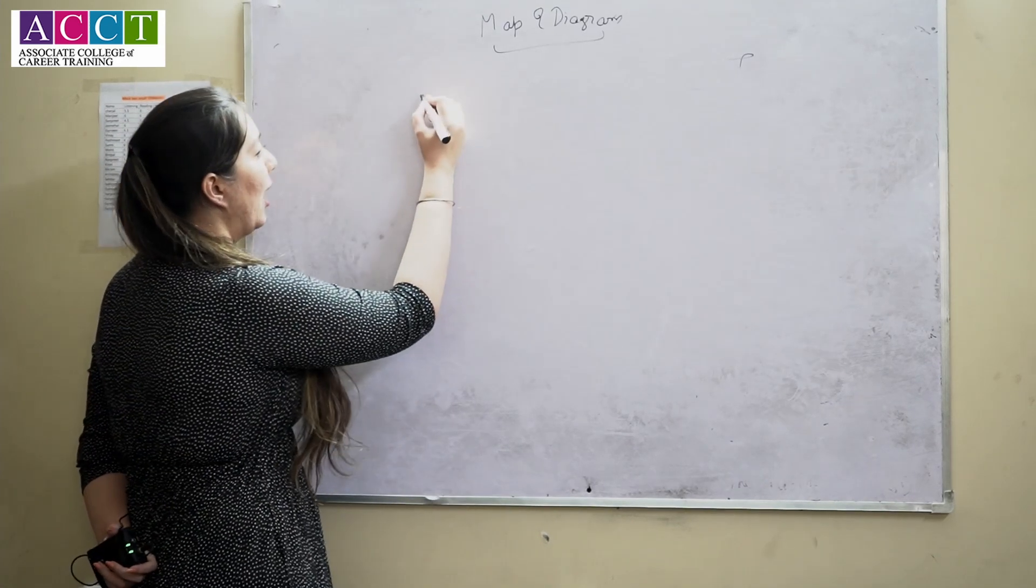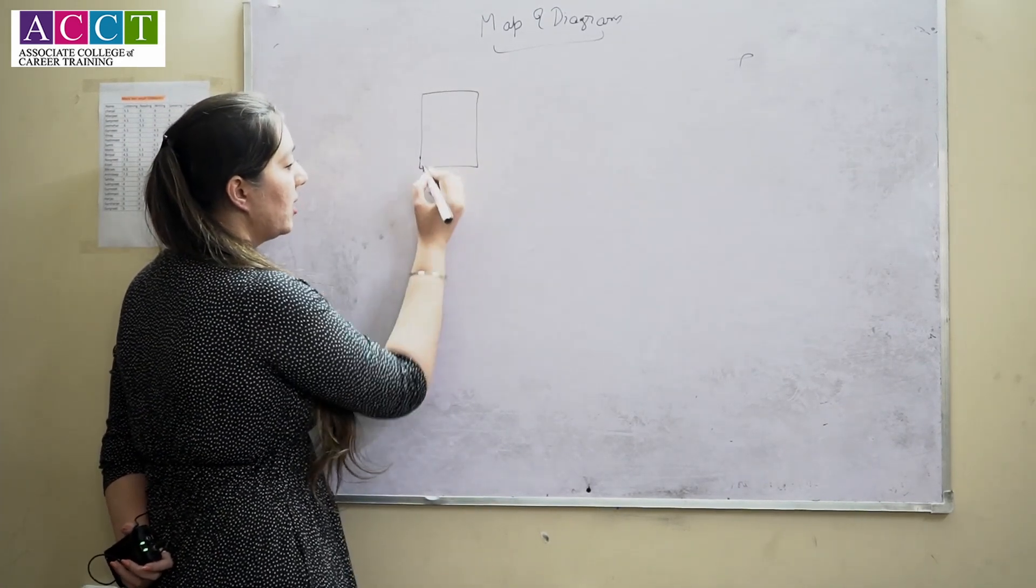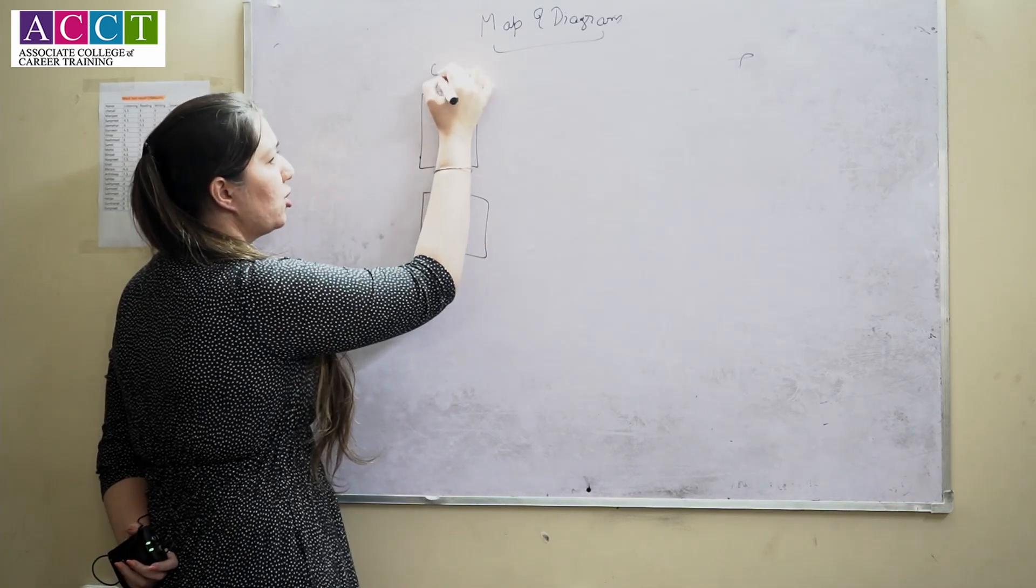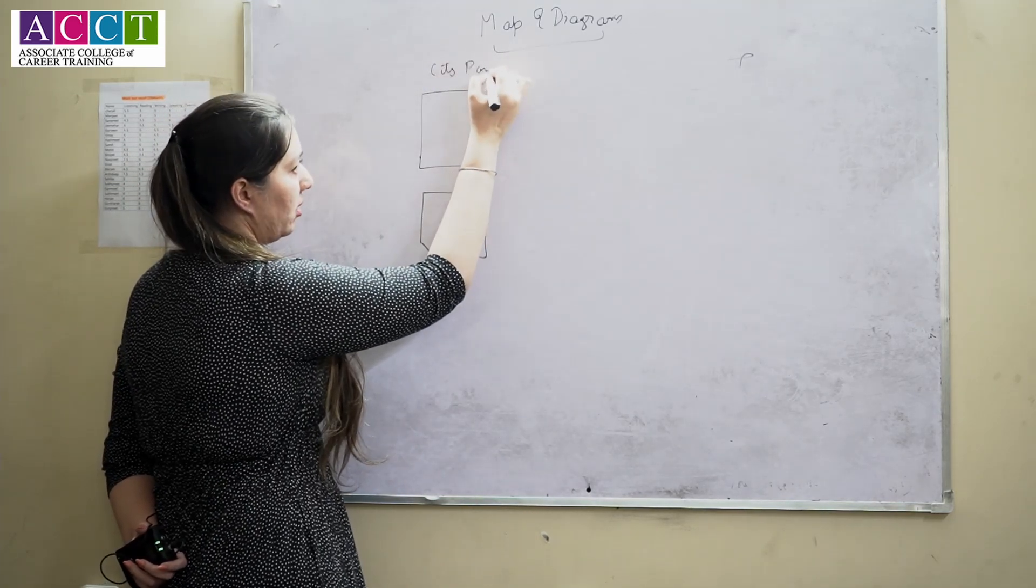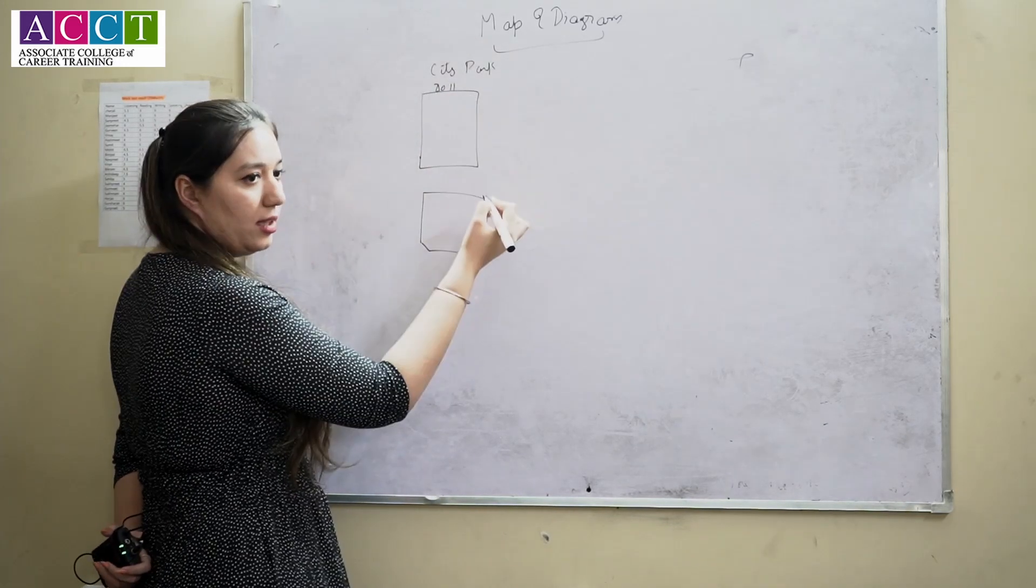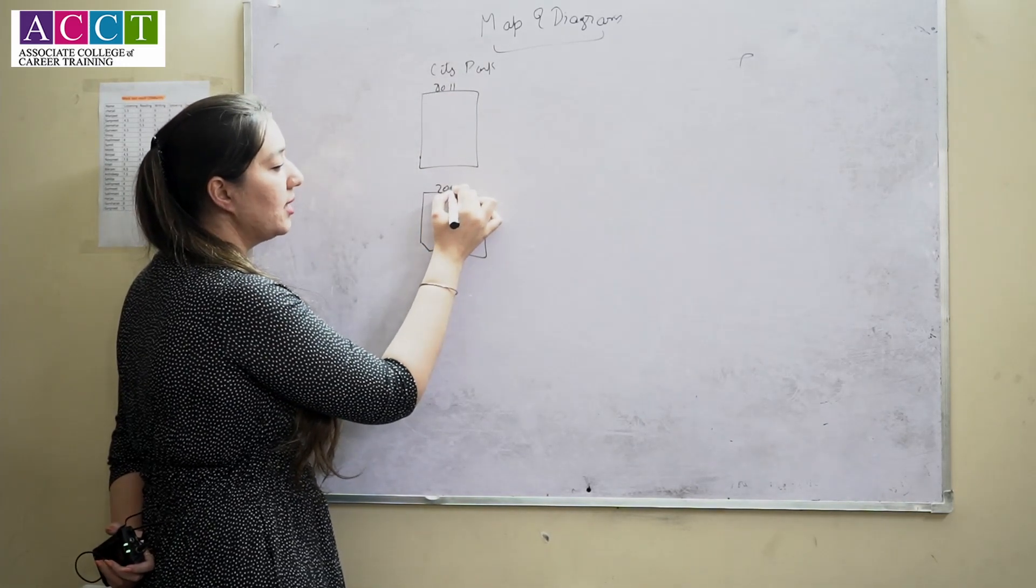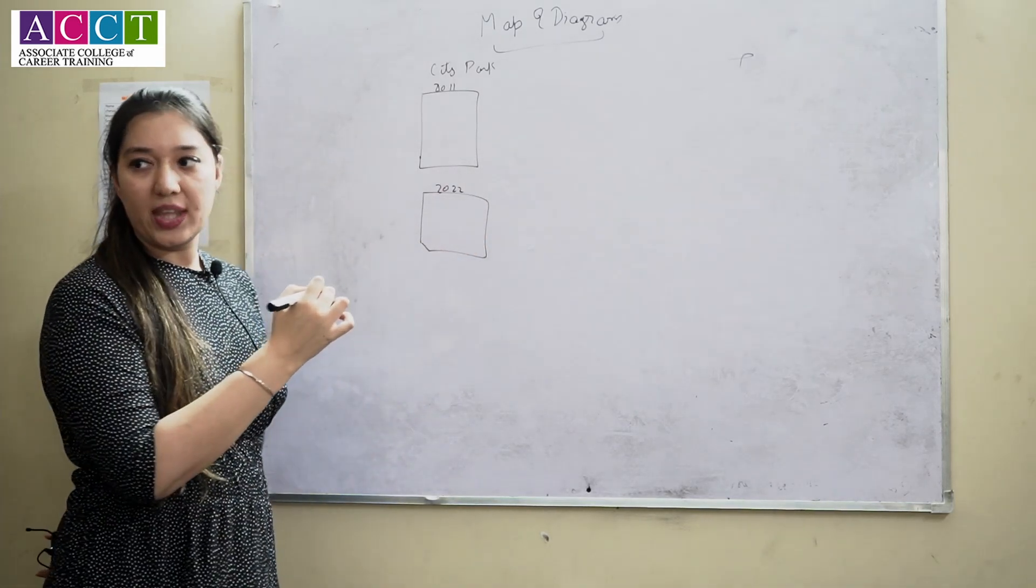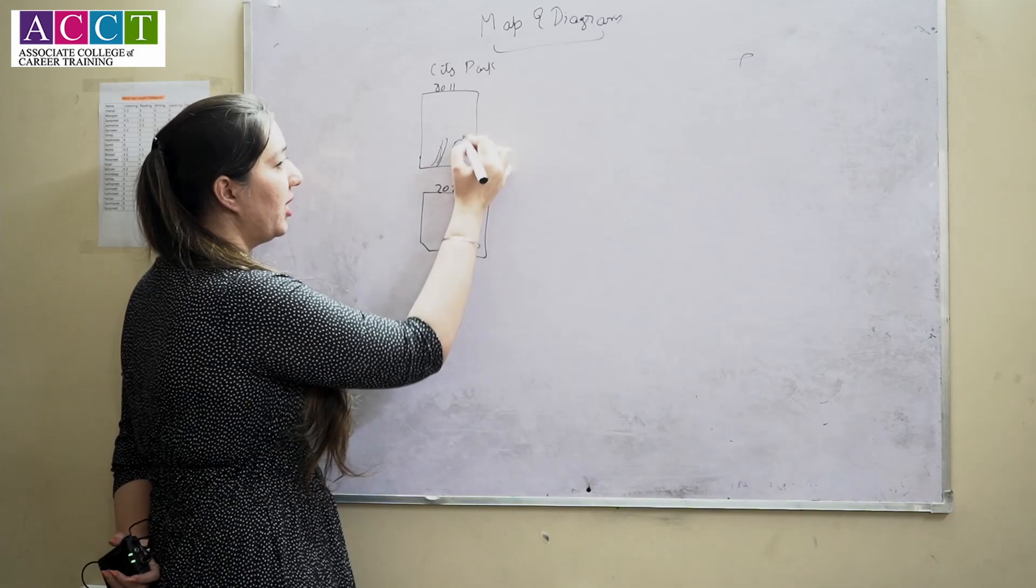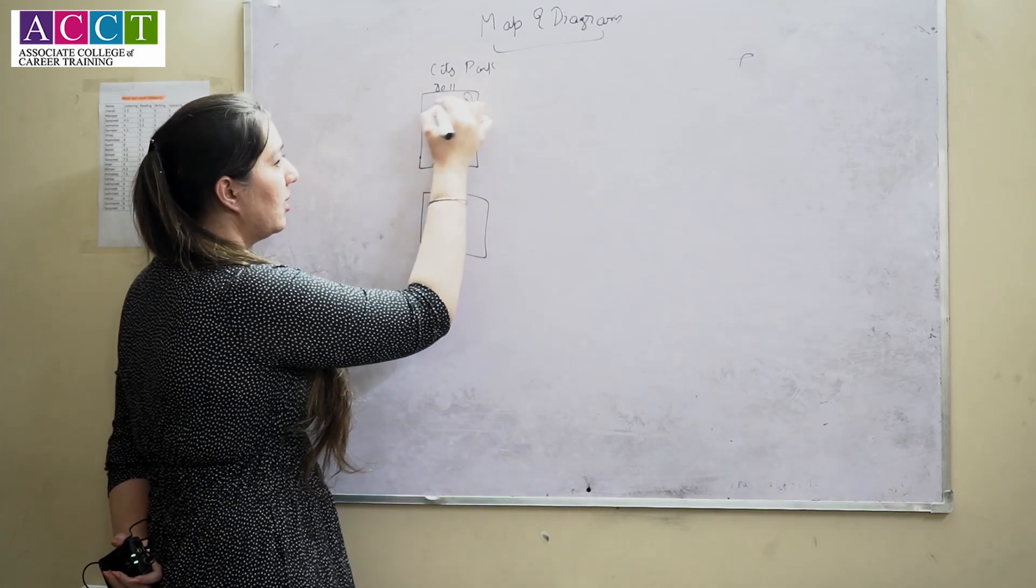How map and diagram looks like - so these are the two types. For example, it is the location of any area, city, park. This is how it looks like in 2011 and this is how it looks like in 2022. So the map will be like there is a road going on, there is a tree, a building, a park, and a ground.